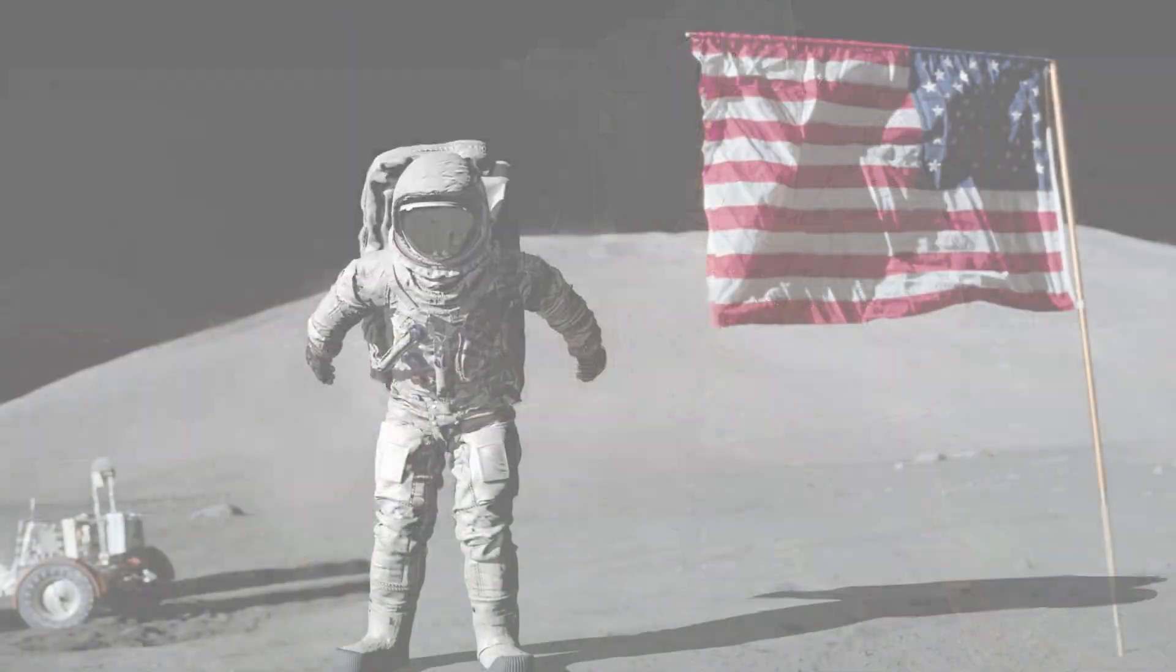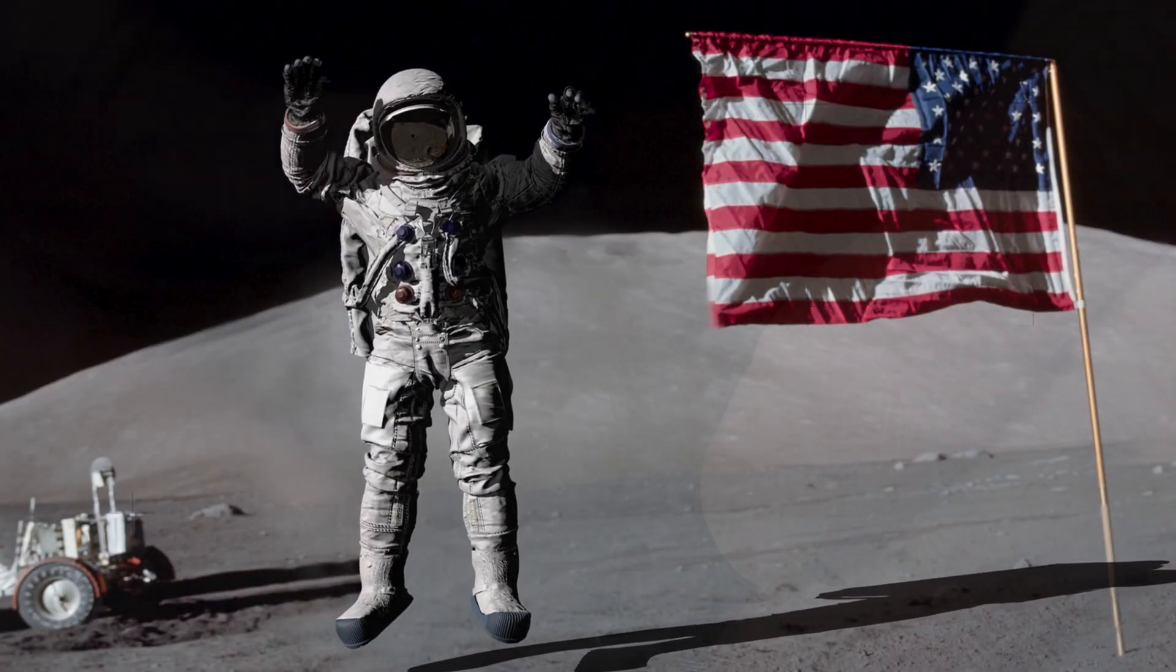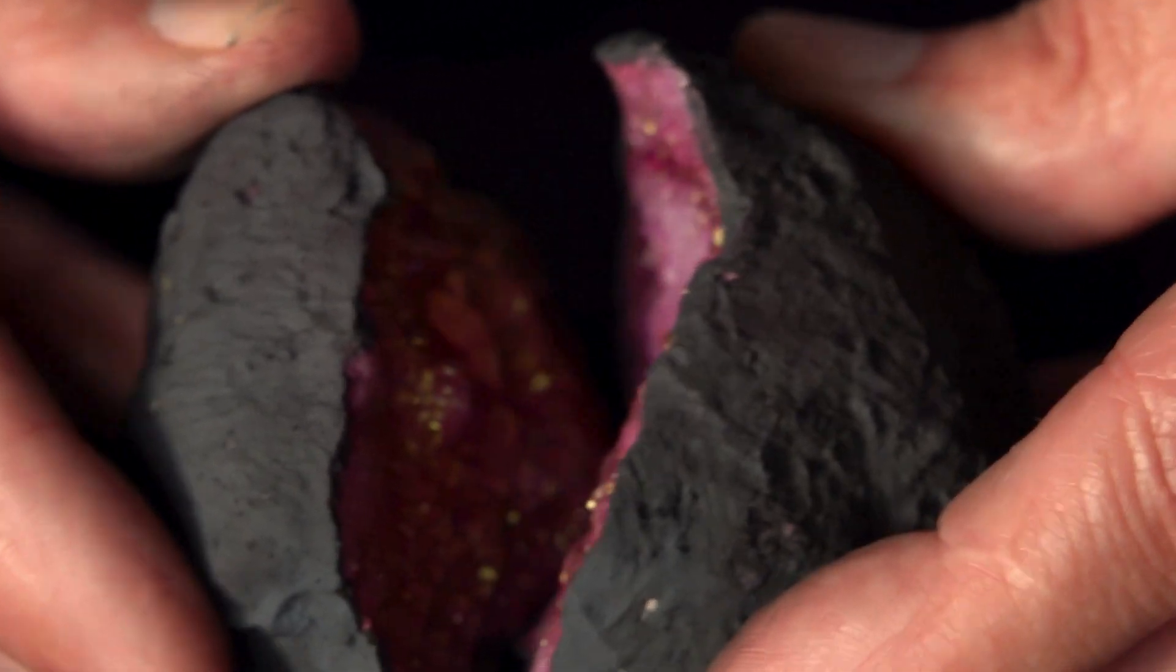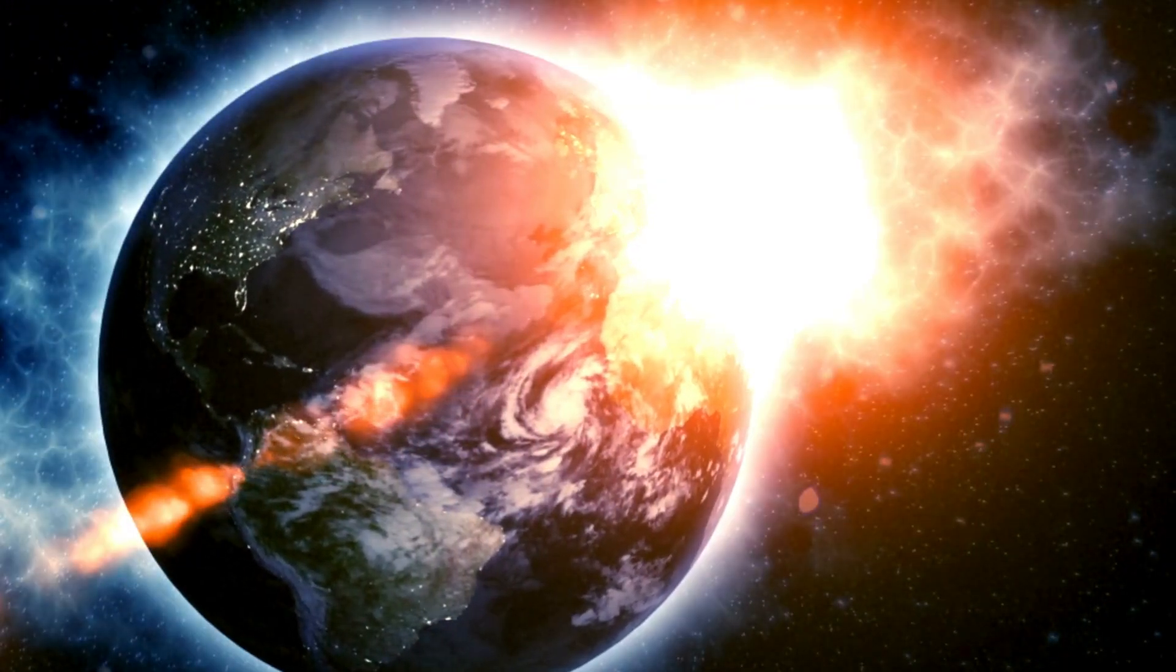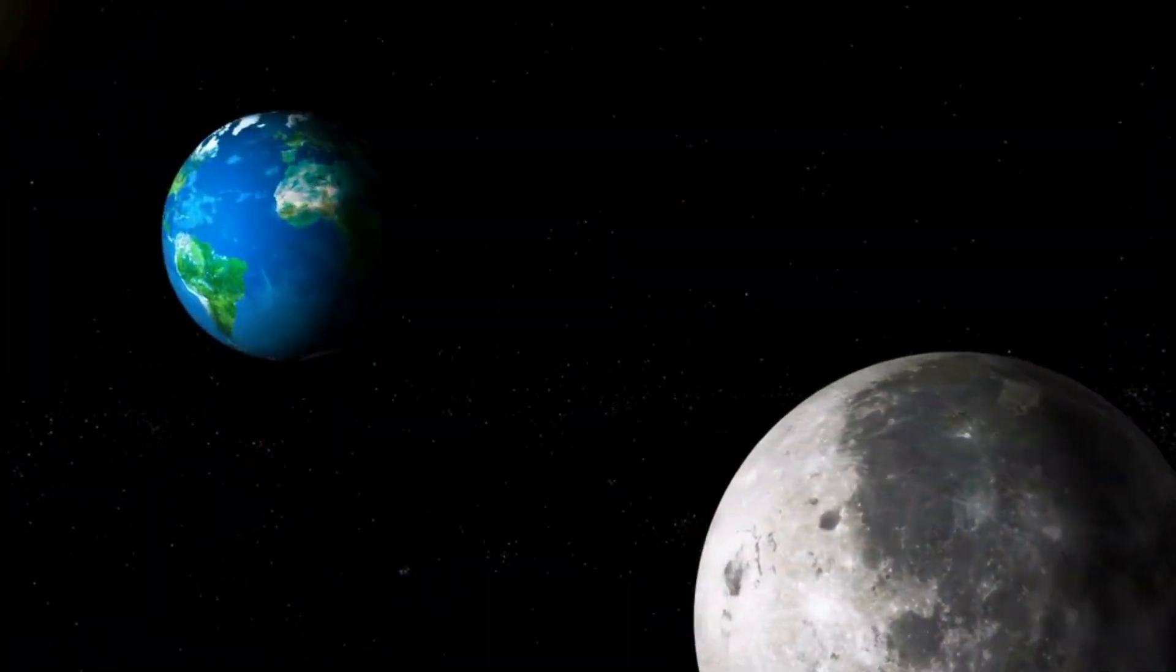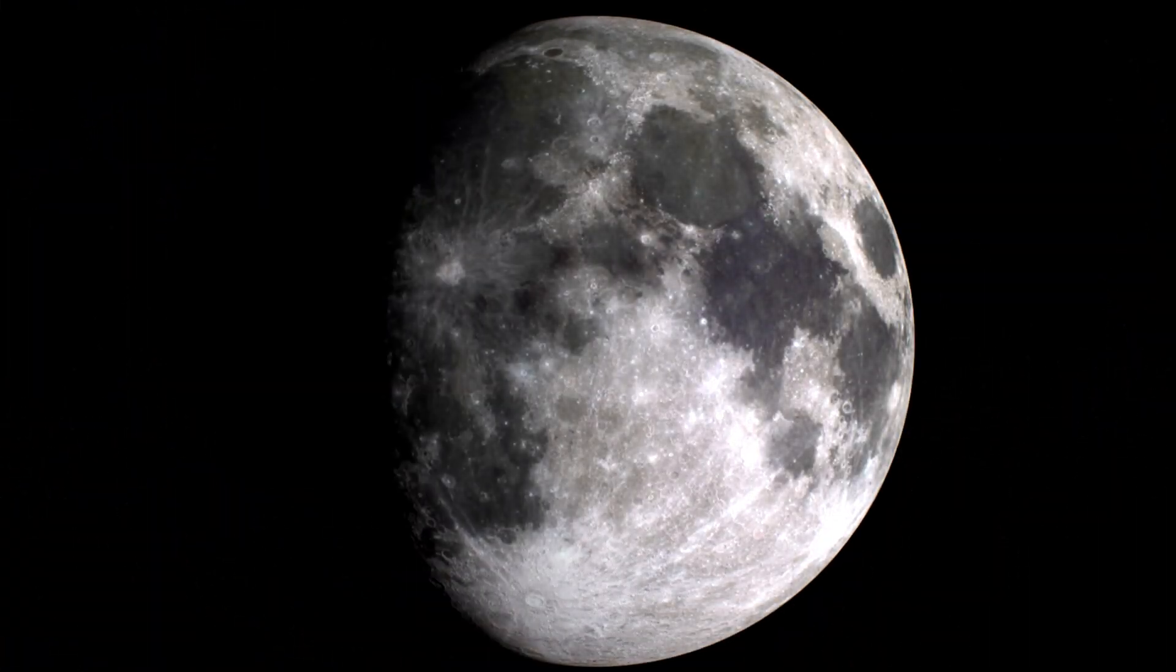First, we have Apollo missions. Remember those astronauts bouncing around on the Moon in their bulky suits? They brought back rocks, and guess what? Those rocks are chemically similar to Earth's mantle. In fact, they're almost identical twins. This similarity suggests that the Moon formed from material ejected during the collision. If the Moon had been captured by Earth's gravity later, it would probably look very different. More alien, less familiar.